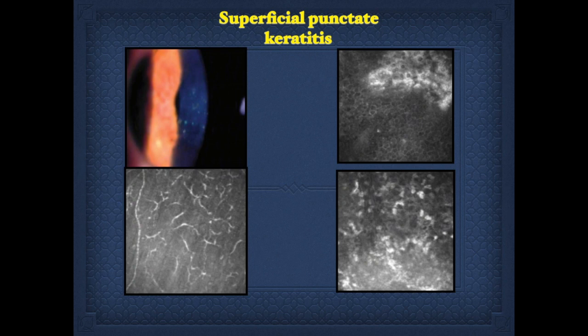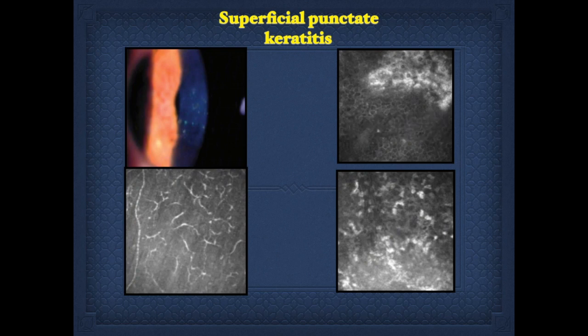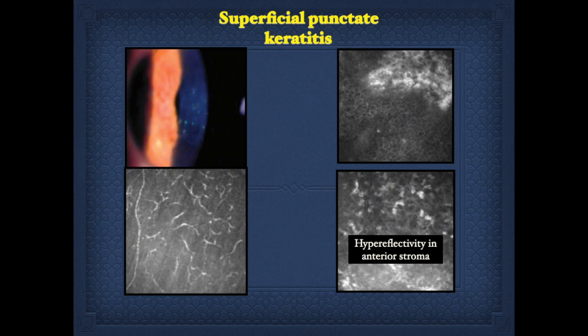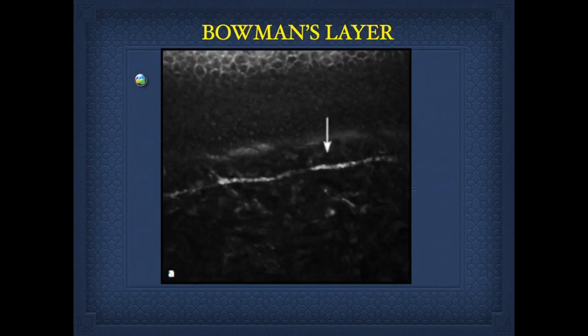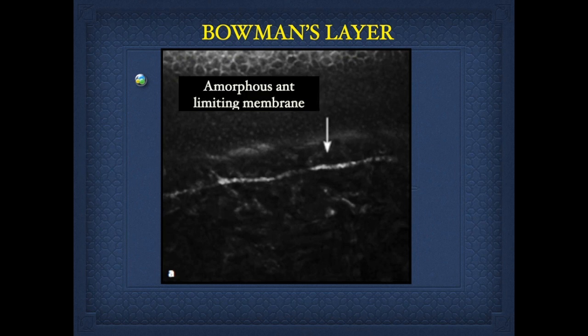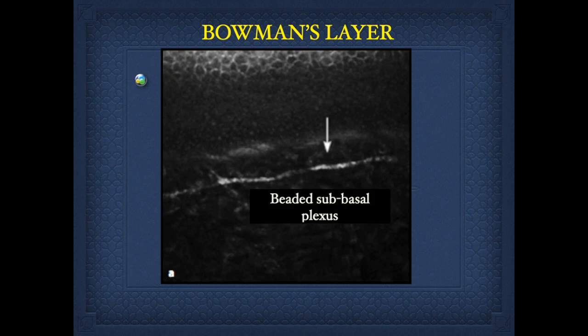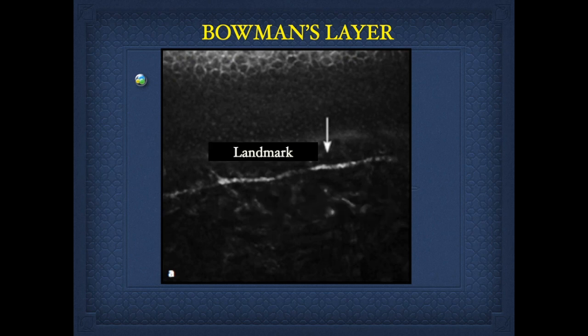Coming to practical applications in pathologies, this is an example of superficial punctate keratitis where we can see cell clusters in the basal epithelial layer. There are also increased Langerhans cells and hyper-reflectivity in the anterior stroma. Coming to Bowman's layer, it has an amorphous anterior limiting membrane, a beaded sub-basal plexus, and this serves as a landmark if there is any pathology in this layer.